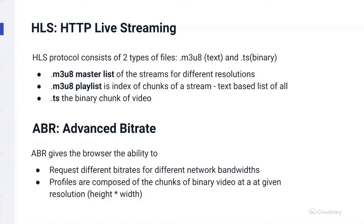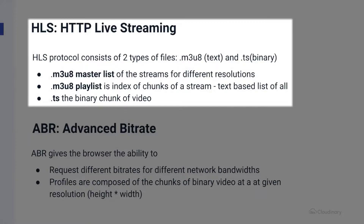For our purposes working with adaptive bitrate streaming, we're going to be using HLS, or HTTP Live Streaming. The HLS protocol consists of two primary types of files: M3U8 files and .ts files. M3U8s are used for two purposes. One M3U8 will contain a master list of all of the different streams available for playback. Once the browser has selected a specific stream, an additional M3U8 file will be downloaded that contains a list of all the individual chunks — the .ts files — that make up the stream.